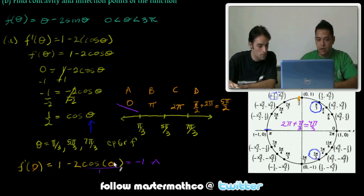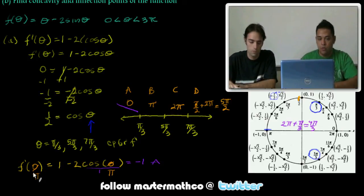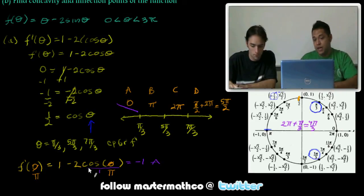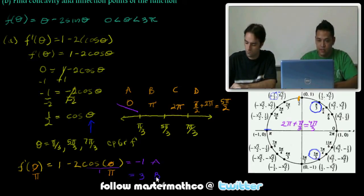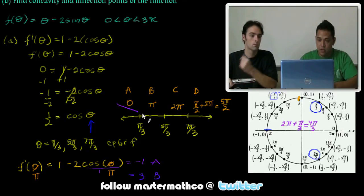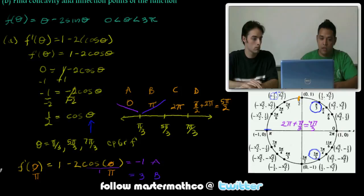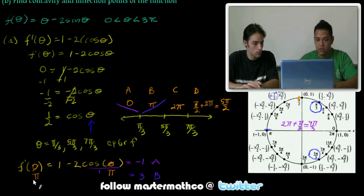What's our next test point? Pi. Cosine of pi, we would look at the unit circle. Cosine is the x value, so that would be negative 1. Negative 1 times negative 2 is positive 2, plus 1 is positive 3. That's test region B. It's increasing.